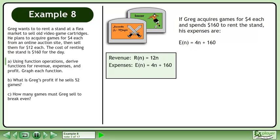If Greg acquires games for $4 each and spends $160 to rent the stand, his expenses are E(n) = 4n + 160.